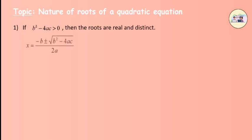x is equal to minus b plus or minus root of b squared minus 4ac, upon 2a.